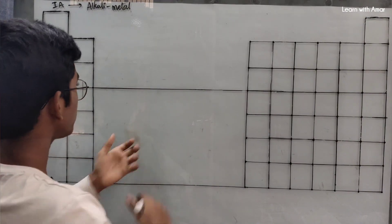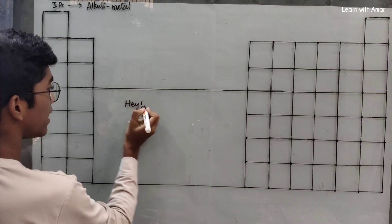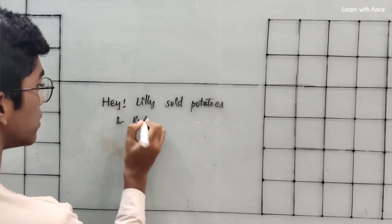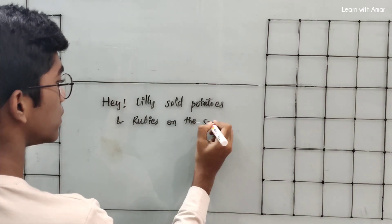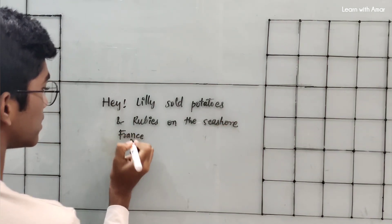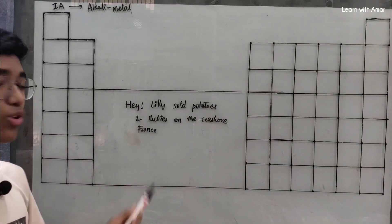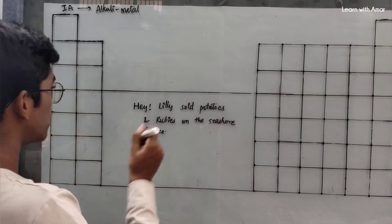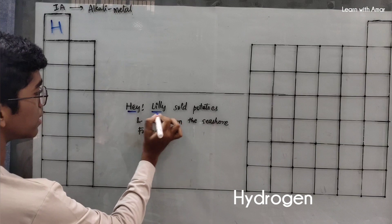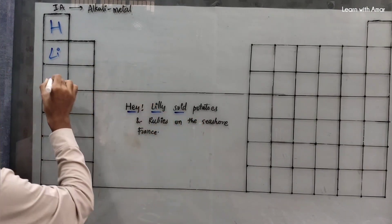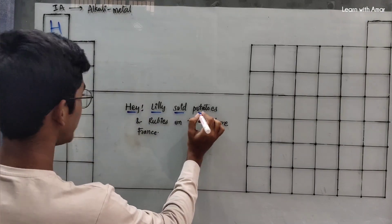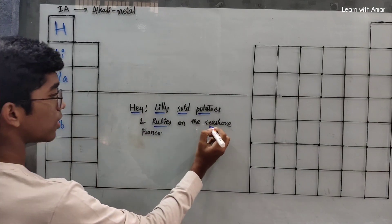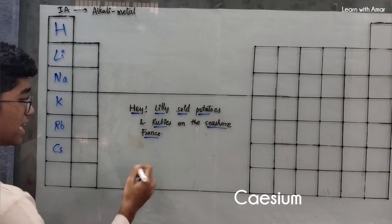To remember this group we use the sentence: 'Hey! Lily sold potatoes and rubies on the seashore of France.' Each word maps to an element — 'Hey' for Hydrogen, 'Lily' for Lithium, 'Sold' for Sodium (Na, from its Latin name Natrium), 'Potatoes' for Potassium (K, from Kalium), 'Rubies' for Rubidium, 'On the seashore' for Cesium, and 'France' for Francium.